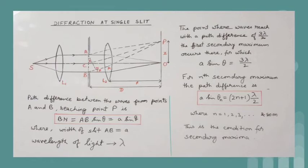So, A sin theta_n is equal to 3 lambda by 2. A similar result is obtained when A sin theta_n is equal to 5 lambda by 2, for which the second secondary maximum is obtained with further lower intensity.